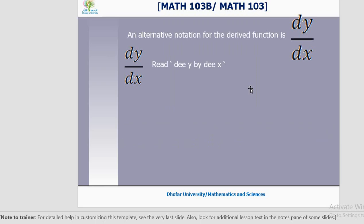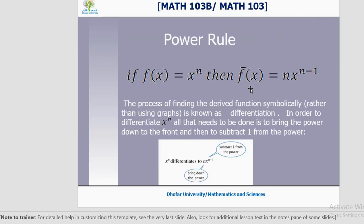How do you write the derivative of a function? We write it as dy by dx — it is not a fraction, it is a style of writing. Now we shall learn to differentiate the power function. If f of x equals x power n, then the derivative f prime x equals n into x power n minus one. What is happening is the power becomes less by one and this number comes down — you bring the power n down and subtract one from the power.